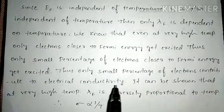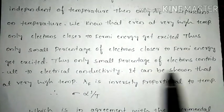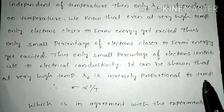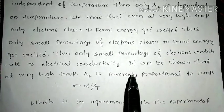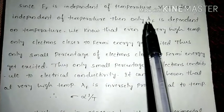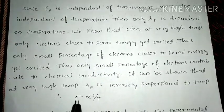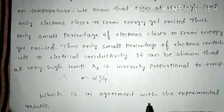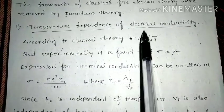It can be shown that at very high temperature, λf is inversely proportional to temperature. As temperature increases, the mean free path decreases. Therefore, since λf is inversely proportional to T, we can say σ is inversely proportional to T, which is in agreement with experimental results. This resolves the first drawback regarding temperature dependence of electrical conductivity.